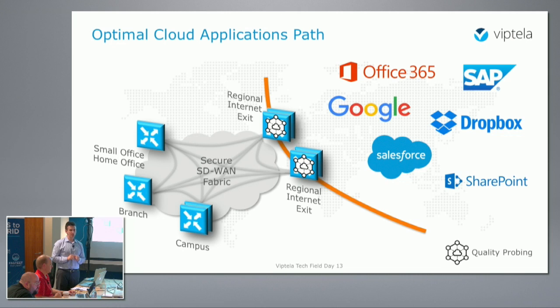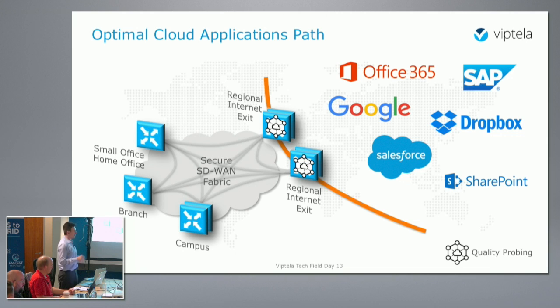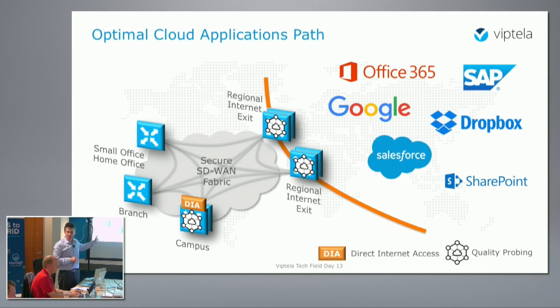We can start looking at the traffic that goes into the cloud services, build our view of how traffic flows, and determine the performance characteristics you are getting to reach that service. We will give you a score of how good your connection is to get to Office 365, Dropbox, SharePoint, Salesforce — all the major SaaS applications. We can kick off that scoring at those regional locations you've decided to use for internet, or you can choose direct internet breakout. It ties back to your security question: security at the regional sites or at each site individually.